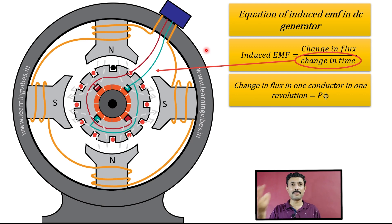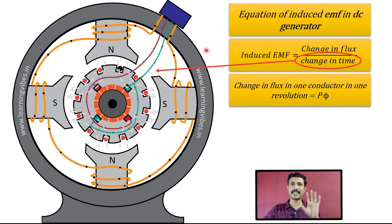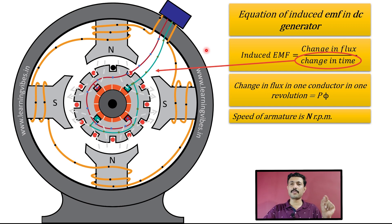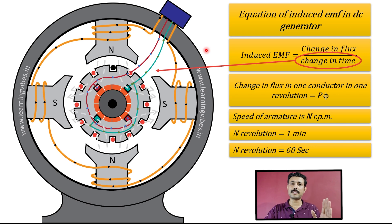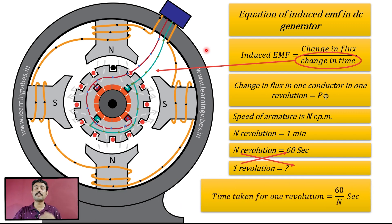Now we will calculate the time required to complete one revolution. We know the speed of the armature is N RPM — it rotates at the speed of N revolutions per minute. To complete N revolutions, it takes one minute, so N revolutions are completed in 60 seconds. Now what we want is how much time it takes to complete one revolution. By simple cross multiplication, the time to complete one revolution is 1 × 60 divided by N, which equals 60/N seconds.